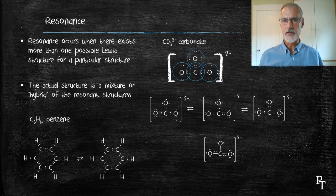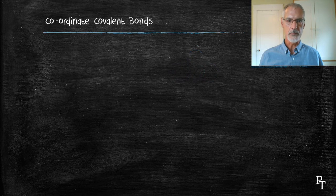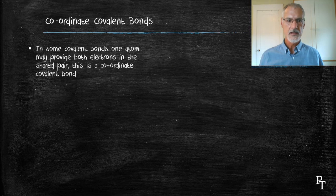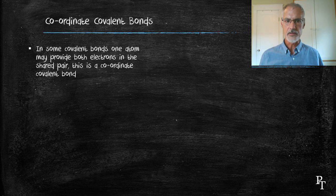Finally, covalent bonds also have what are called coordinate covalent bonds. In this situation, one atom can do all of the bonding. Let's go back to carbon monoxide for a moment with 10 electrons.